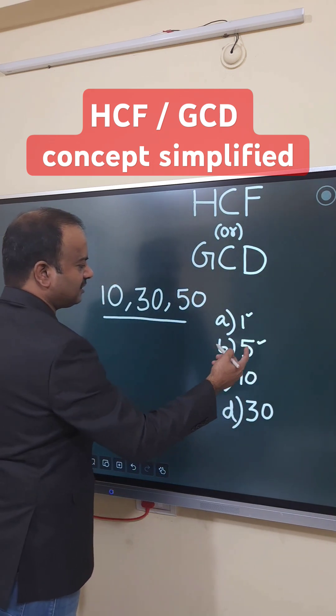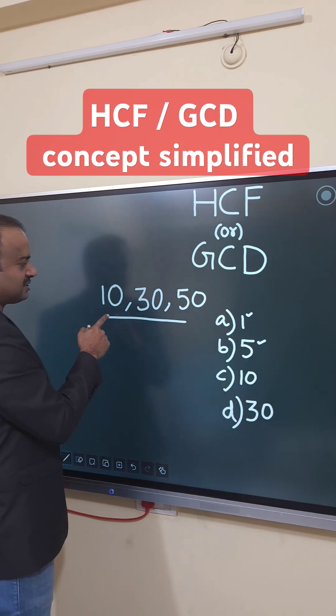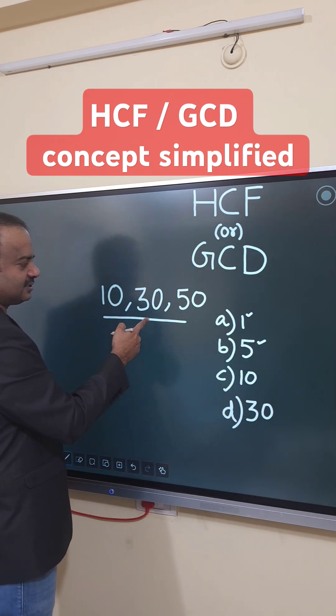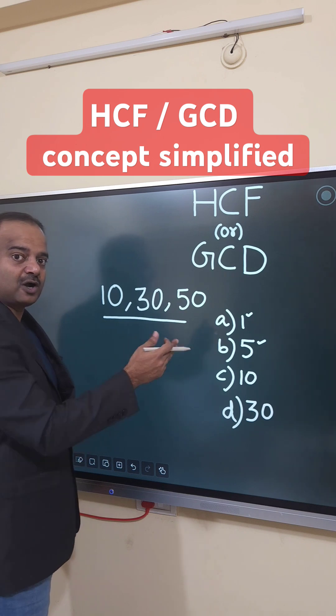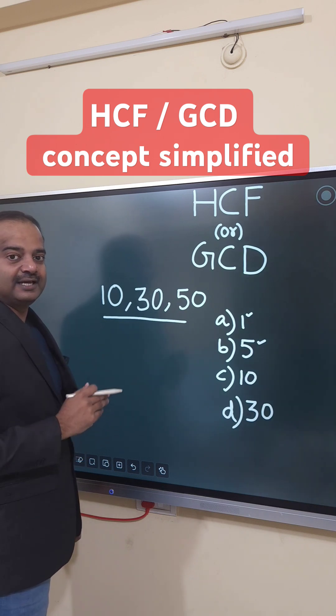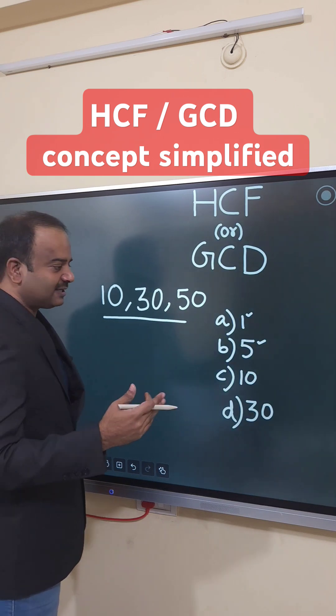Let's check five. Five twos are 10, five sixes are 30, five tens are 50. Five is also a common factor — but is it the highest one?